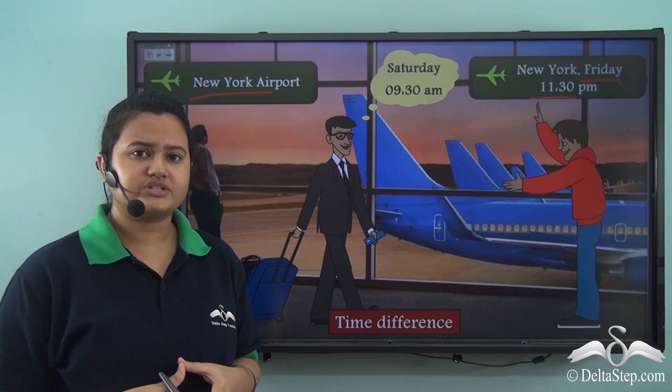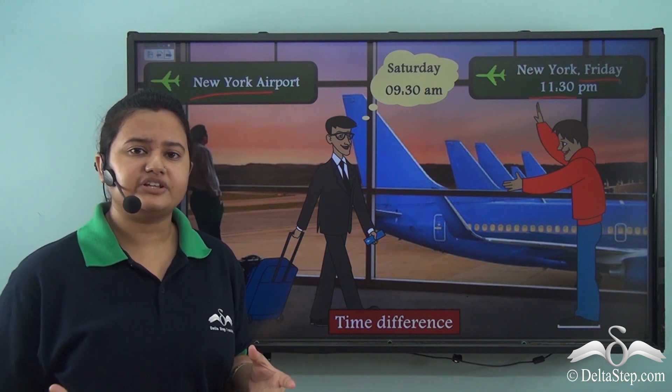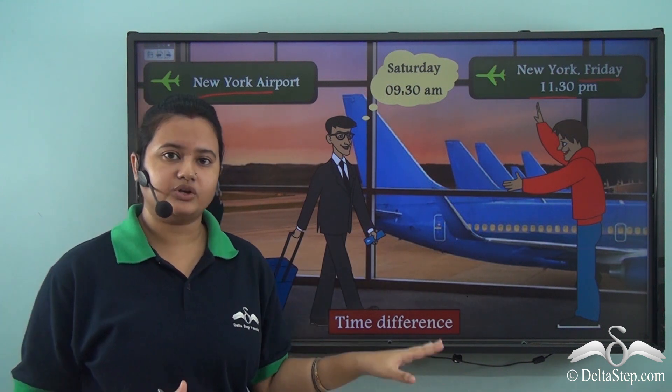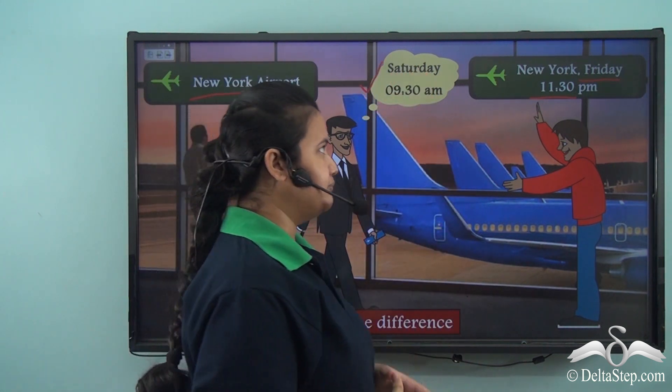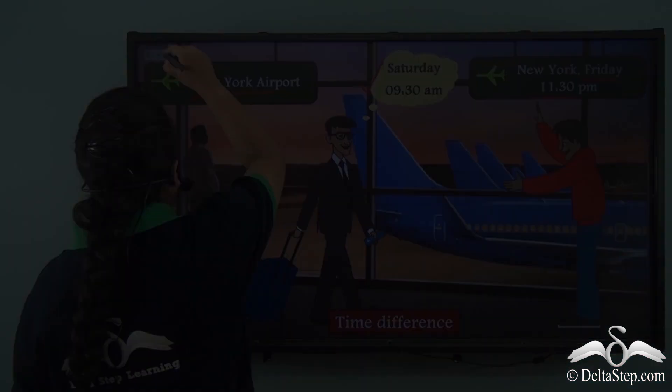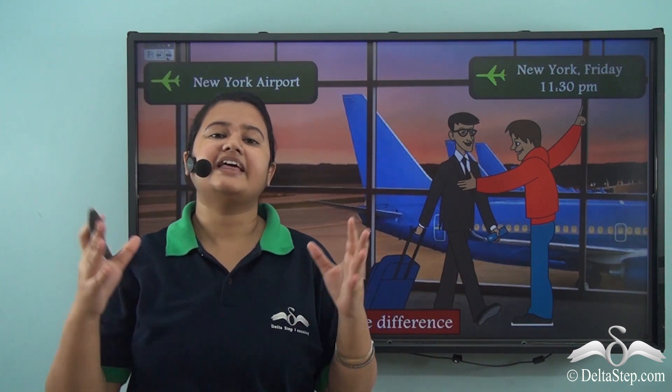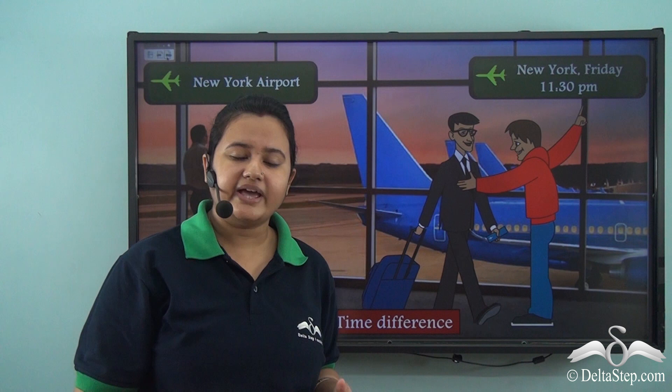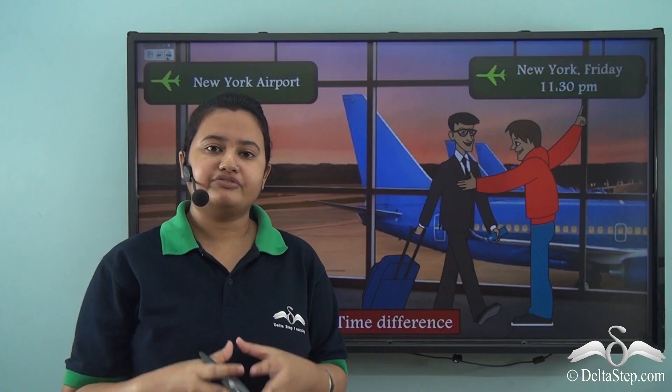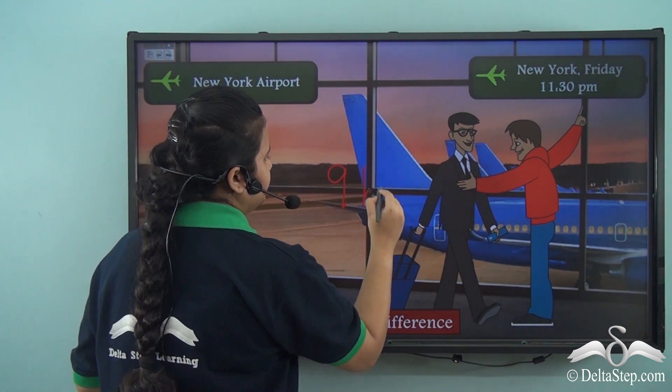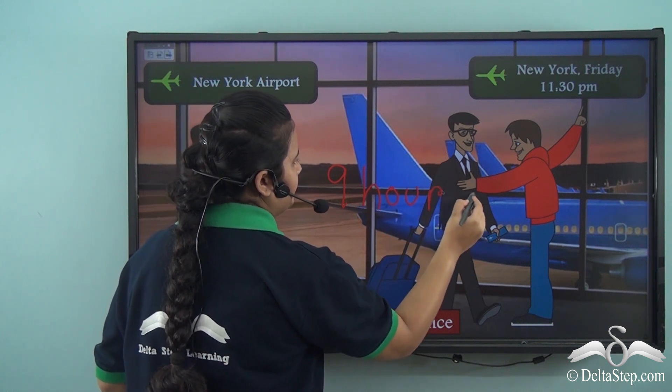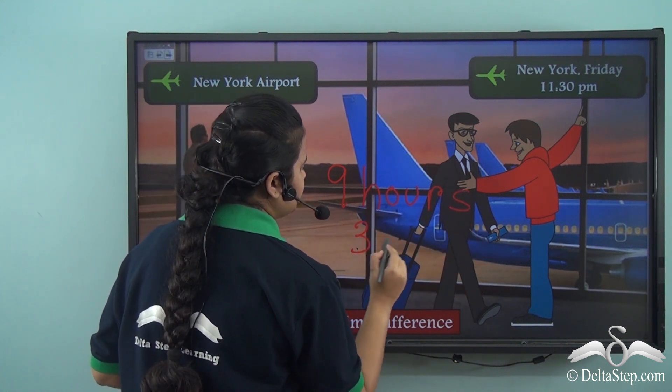Samir was confused as to why there is difference in timing because according to his calculation it should be Saturday 9.30 am. But the actual time was 11.30 pm on Friday. Vivek clarified that there was difference in time because USA and India follow a different timing pattern. And the difference between the two countries is 9 hours and 30 minutes.